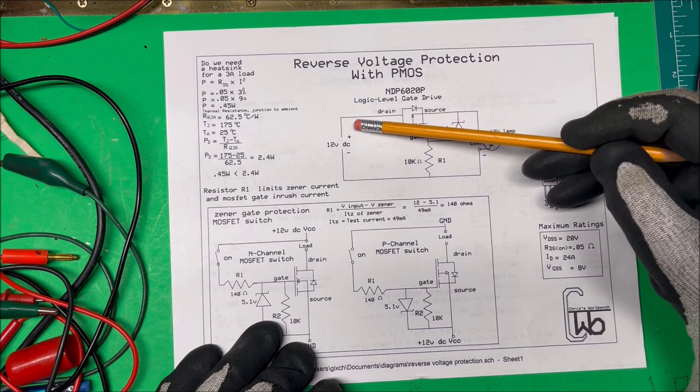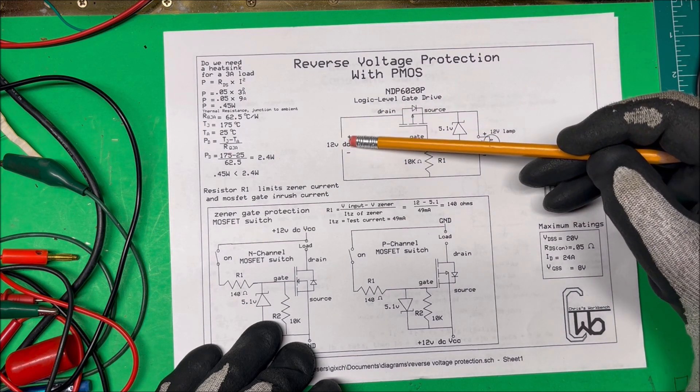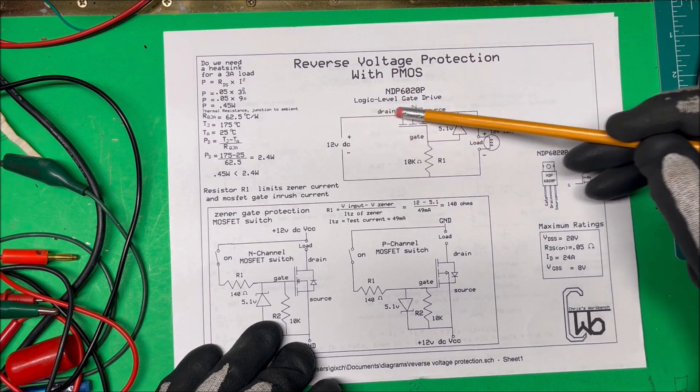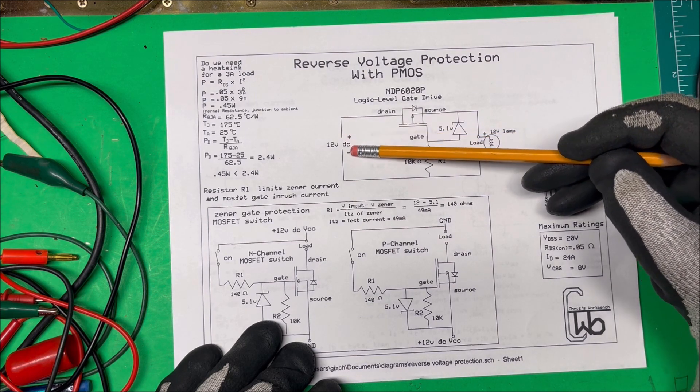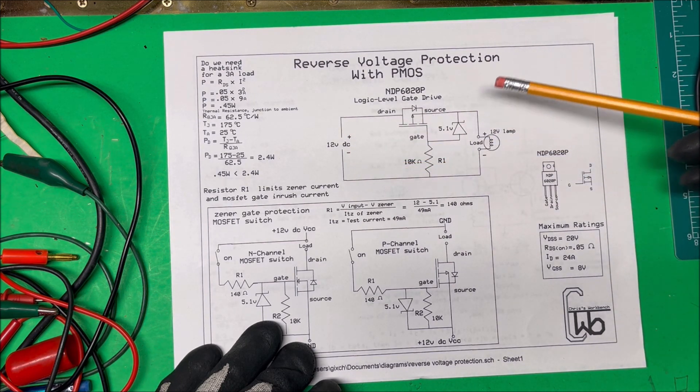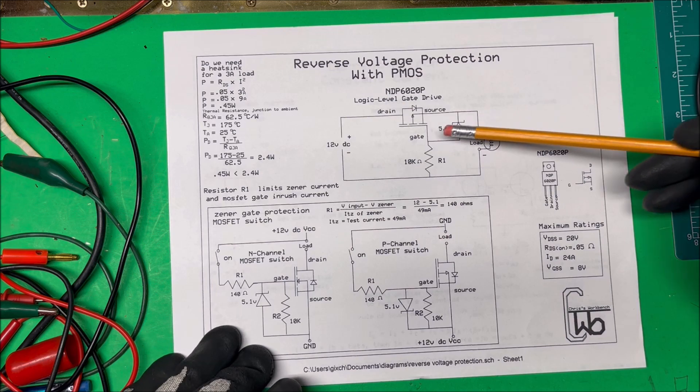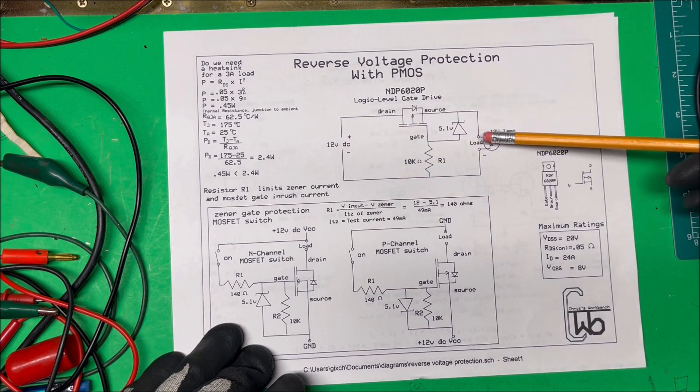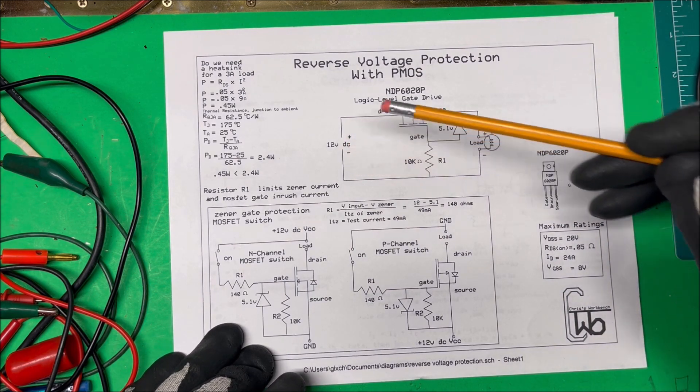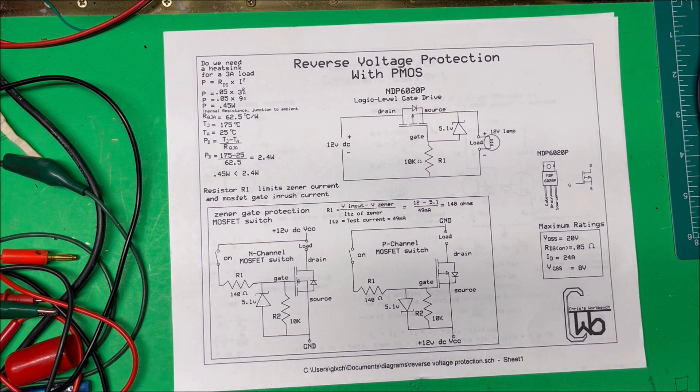That's going to keep us from shorting this thing out. So in this direction, if we have positive here, it's going to turn the load on. And if we put negative up here and positive down here, nothing's going to happen—it's just going to sit there. So that'll protect our circuit if we make a mistake with our power supply.